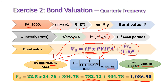So bond value equals the present value of coupon payments plus the present value of face value: 782 plus 305 equals 1,086 Egyptian pounds. Since bond value is greater than the face value of 1,000, this bond is said to sell at a premium, which implies an increase in demand for this bond resulting in a higher price than its face value.